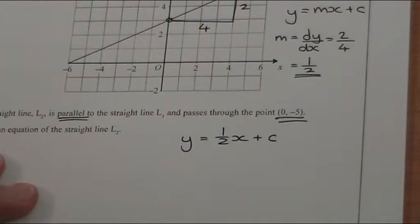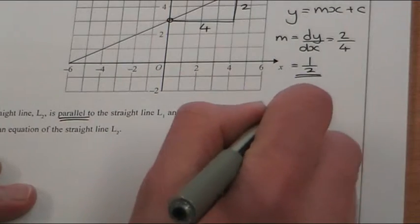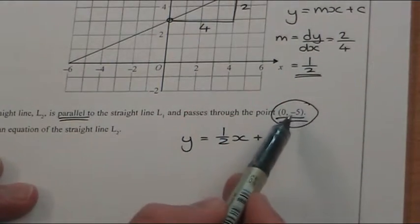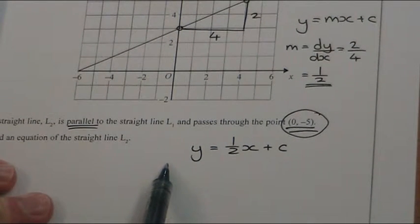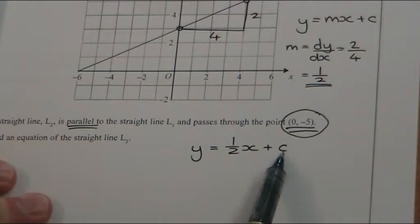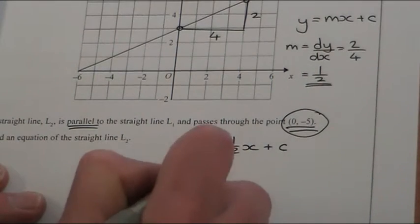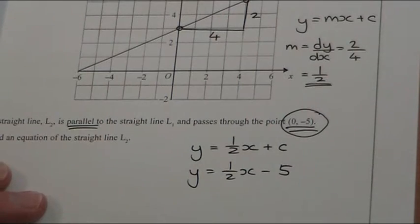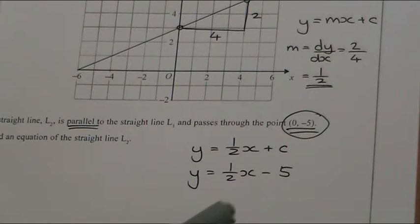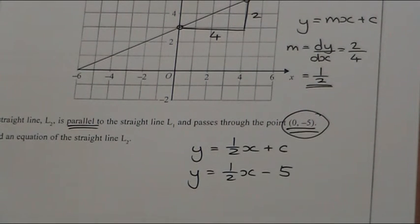Now this part is particularly easy for this question, because if you try and picture 0 minus 5, it's actually on this line, 0 minus 5, which is what we call the y-intercept. And this last part is the gradient and the y-intercept. So it's half x minus 5. They can ask you much harder questions than that if they don't give you the y-intercept, but that one's particularly easy.